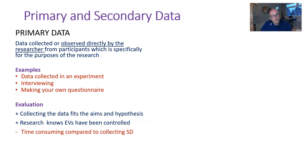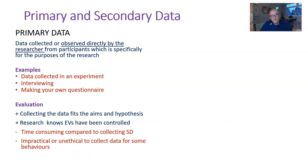However, primary data is time-consuming because you've got to plan and collect it all yourself, work out all the problems, go and collect the data, and speak to the participants. Sometimes it's also impractical — either because there's so much data to collect that it's not feasible, or because it's unethical or not accessible. For instance, if a researcher wanted to identify students' performance in an exam, it would be unfeasible for them to set up their own exams when they can just collect the data from the government.